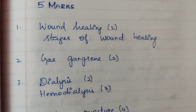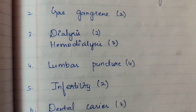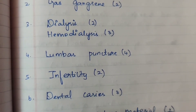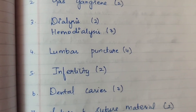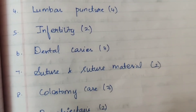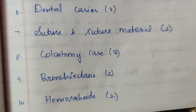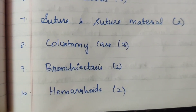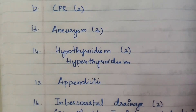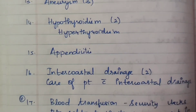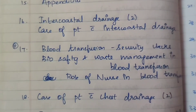Next for 5 marks: wound healing 2 times, stages of wound healing 1 time. Gas gangrene 2 times. Dialysis 2 times — hemodialysis and peritoneal dialysis; hemodialysis 3 times. Lumbar puncture 4 times. Infertility 2 times. Dental caries 3 times. Suture and suture material 2 times. Colostomy care 3 times. Bronchiectasis 2 times. Hemorrhoids 2 times. Biomedical waste management 2 times. CPR 2 times. Aneurysm 3 times. Hypothyroidism 2 times. Hyperthyroidism 1 time. Appendicitis 1 time. Intercostal drainage 2 times — care of patient with intercostal drainage.